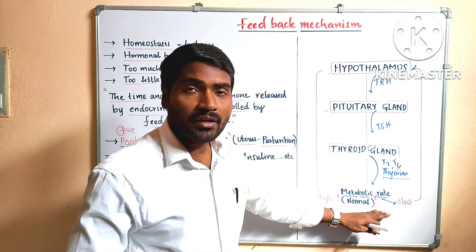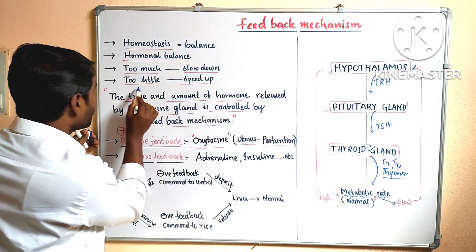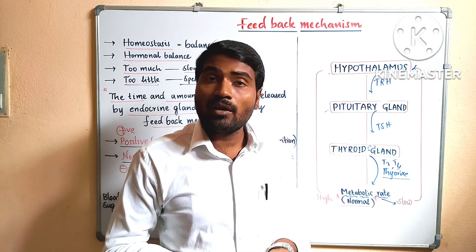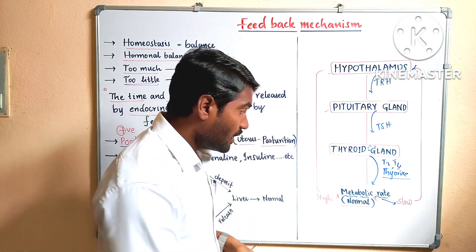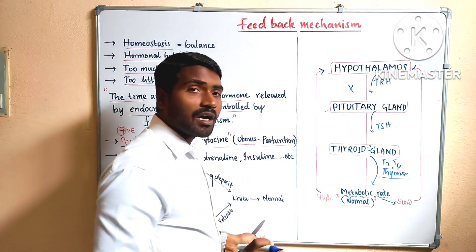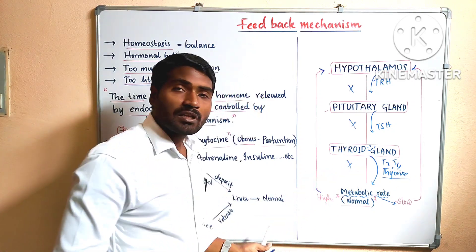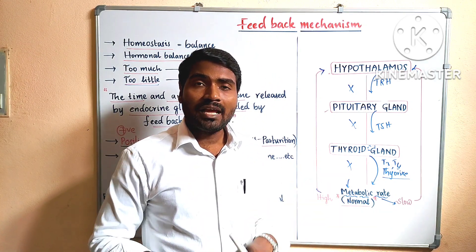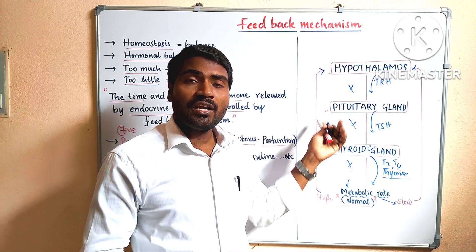When the hormone level is low in the body or any action is very slow, it stimulates the hypothalamus to speed up that action. Suppose the metabolic rate is higher than the normal level — the high metabolic rate also stimulates the hypothalamus to stop the production of thyroid-stimulating hormone. Thereby, there is no production of TSH from the pituitary gland and no production of thyroxine from the thyroid gland, so the metabolic rate gets down until it reaches the normal level.